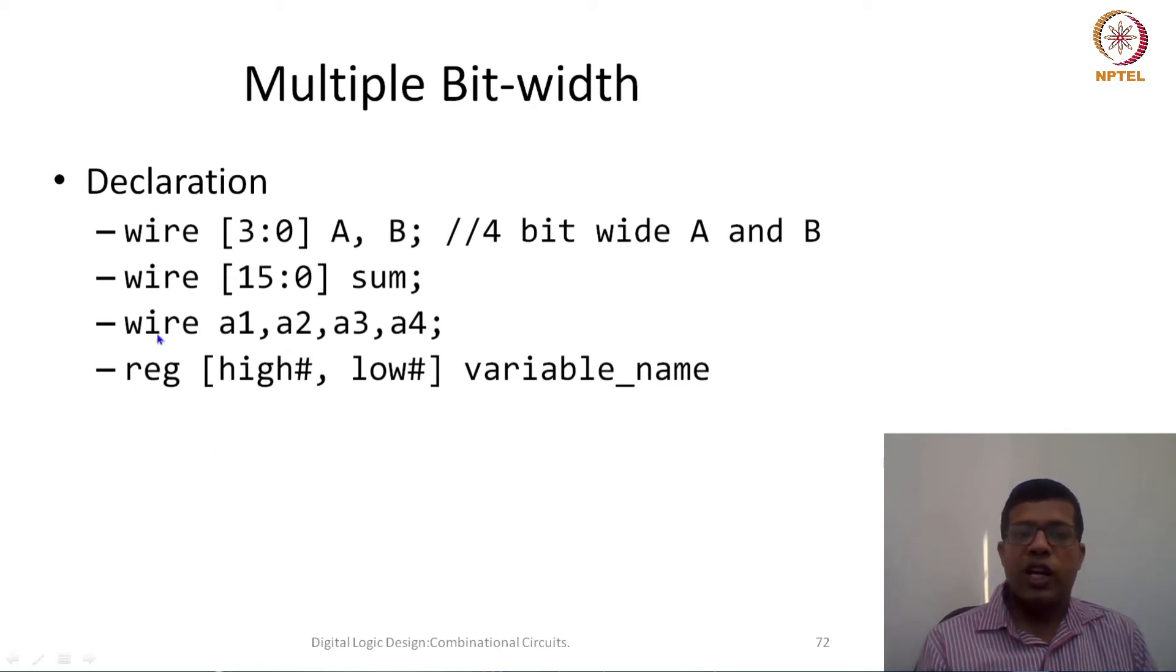Instead of wire there could be reg also. This type could be interchangeably used for declaration. In general we are saying this is the MSB, this is the LSB. Then there could be a question, can I define it like 0 colon 3? Yes you can, but in that case the 0th bit would be the most significant bit while whatever is written here is the least significant bit. The pattern would still remain same.